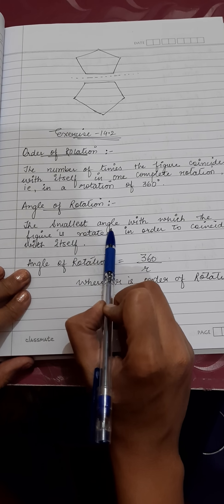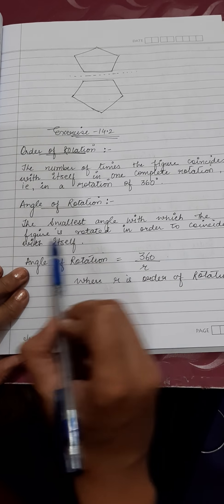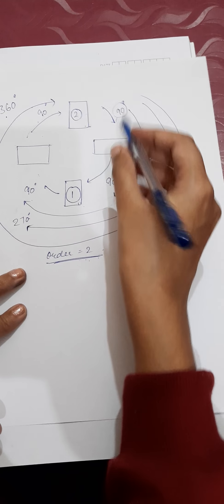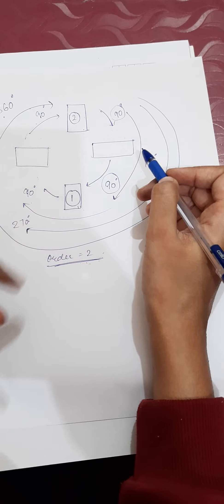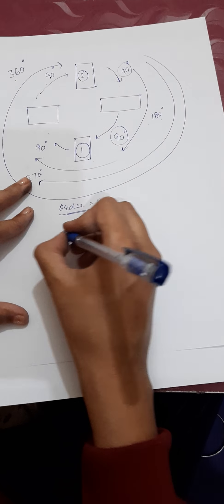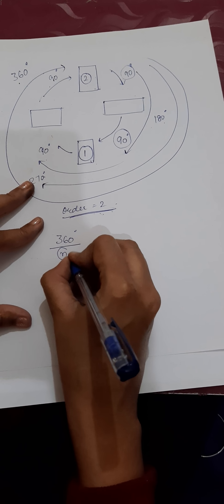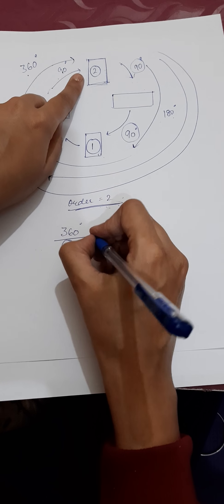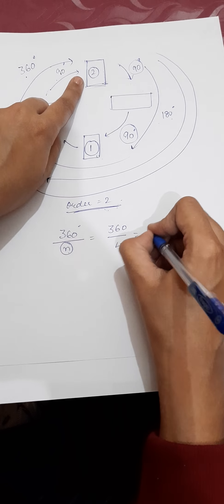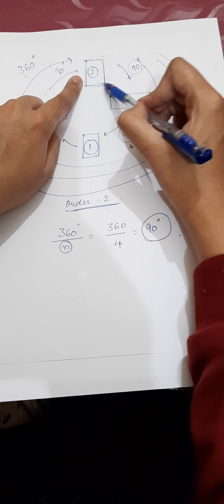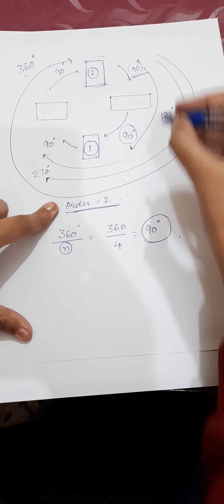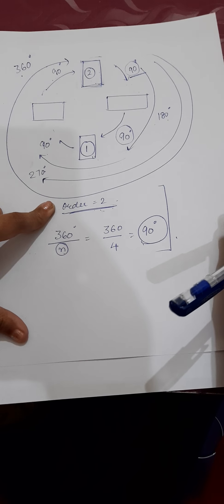The smallest angle by which the figure is rotated in order to coincide with itself is called the angle of rotation. For example, I rotated the duster by 90 degrees because there is a formula: the angle of rotation equals 360 divided by n, where n is the number of sides. This figure has four sides, so 360 divided by 4 gives 90. So the angle of rotation is 90 degrees. These two concepts — order and angle of rotation — we will use in this exercise.